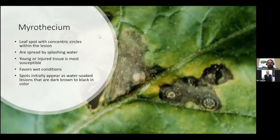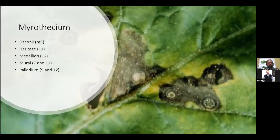Another disease commonly seen in foliage items is Myrothecium. This will typically express itself as a leaf spot with concentric circles in the lesion. It's spread by splashing water, and the young or injured tissue is most susceptible to this disease. It favors hot, humid conditions, and the spots will initially appear as water-soaked lesions that are dark brown or black in color. Some very good controls for Myrothecium are Daconil, Heritage, Medallion, Mural, and Palladium.